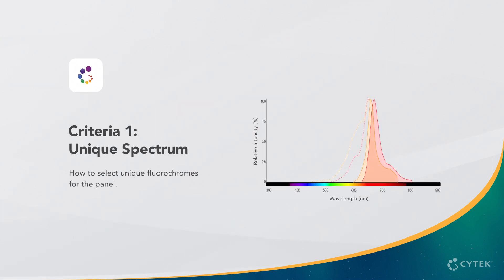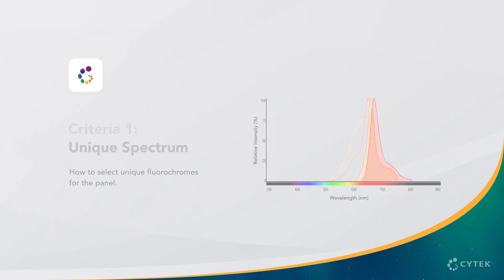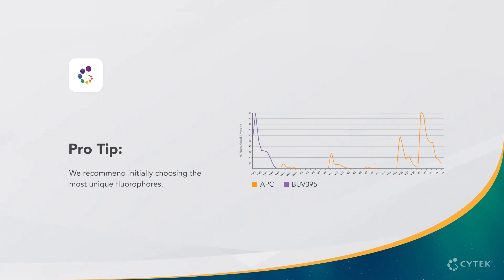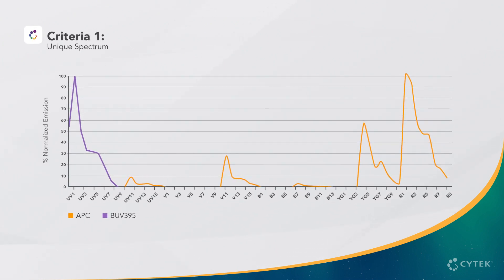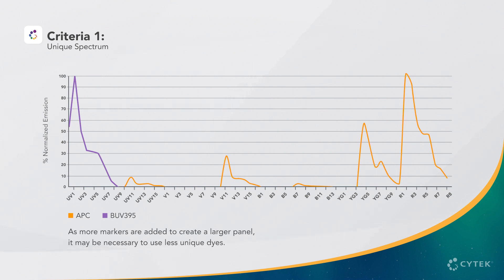Let's discuss the first criteria: how to select unique fluorochromes for the panel. We recommend initially choosing the most unique fluorophores. A good method is to select fluorophores with separated primary excitation peaks on different lasers. For example, BUV395, excited by the UV laser, and APC, excited by the red laser, are clearly unique. As more markers are added to create a larger panel, it may be necessary to use less unique dyes.